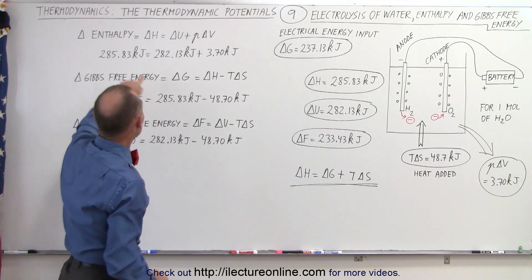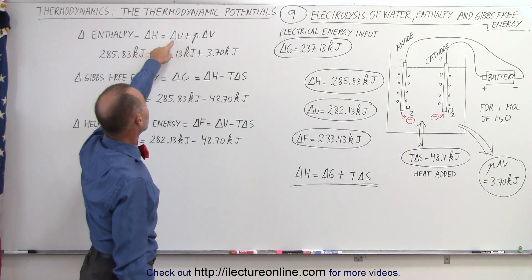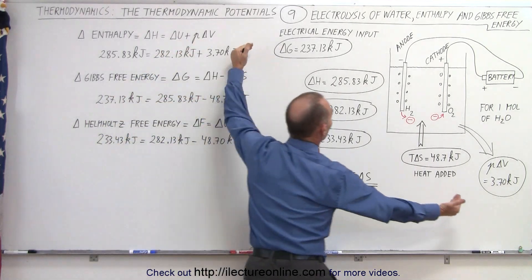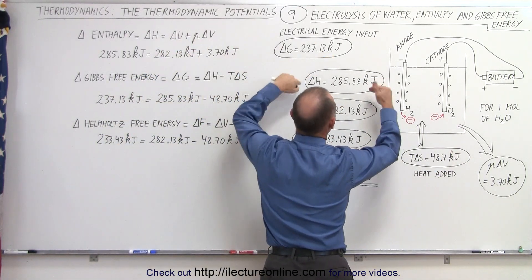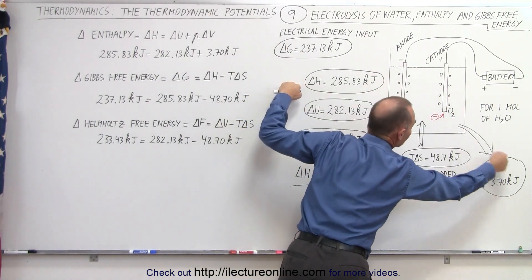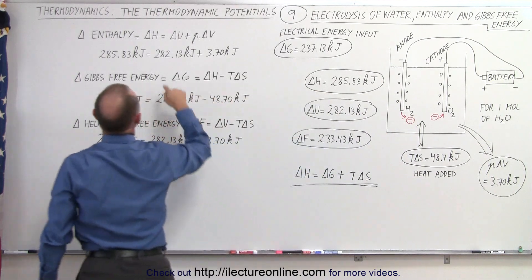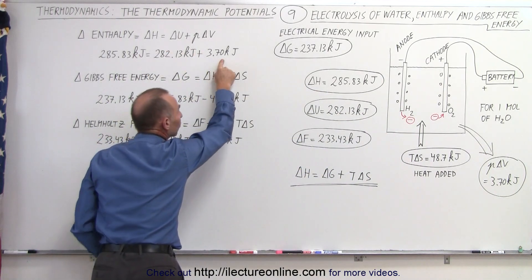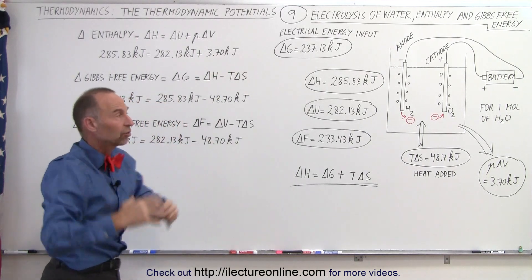But what we do know is we know this equation already where it's simply the change in internal energy plus P delta V. So you add all that heat together, that's delta H, and then you subtract from that the P delta V. So you can see that the change in internal energy is the heat added minus the work done by the system to expand the hydrogen and oxygen gas.